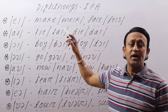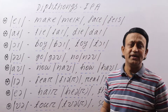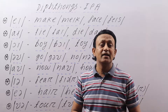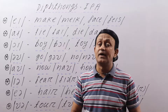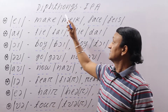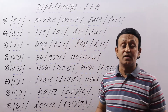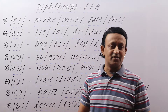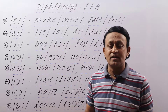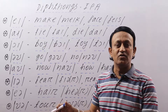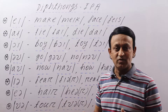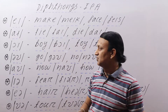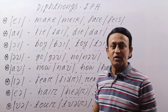Diphthongs are part of the IPA. IPA stands for the International Phonetic Alphabet. The IPA has monophthongs, which are the single vowel sounds; diphthongs, which are the double vowel sounds; and triphthongs, which are the triple vowel sounds. The IPA also contains consonant sounds. In today's class we're talking about diphthongs and we'll learn all the sounds one by one.